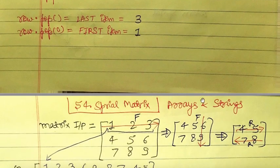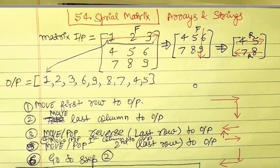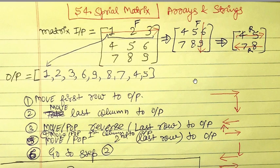Now let's define the procedure step by step. If you haven't understood pop yet, please pause the video and review it. You can open a Python IDE and run the pop operations to understand it. It is very important to understand pop before viewing the rest of the video. Now let's say we have the input matrix [[1,2,3],[4,5,6],[7,8,9]].